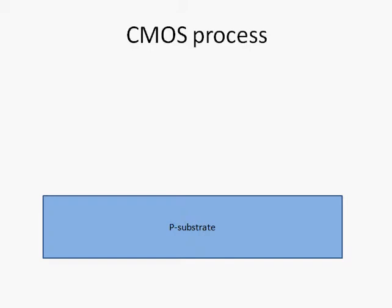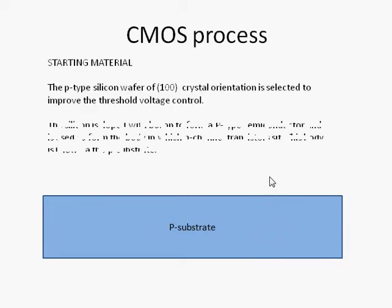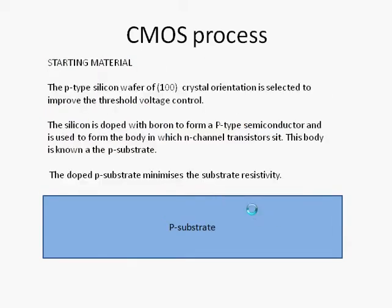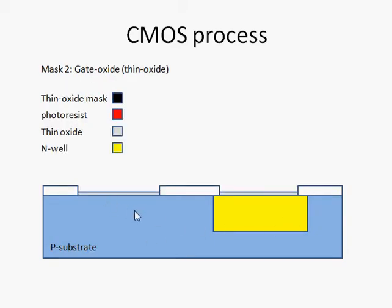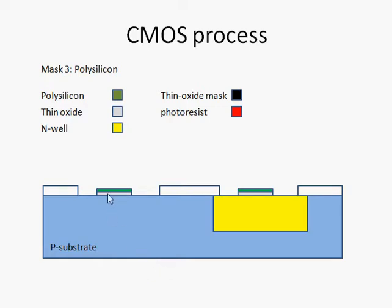Welcome back to part 2 of our discussion on the CMOS process. Let's quickly recap what we did earlier. We first had a P-substrate and then we defined the N-well. The N-well is where all the P-MOS transistors will be located, and the N-MOS transistors will be seated in the P-substrate. After which, we deposited a layer of gate oxide followed by a layer of polysilicon to form the gate of the transistors. So if you're looking for the gate of the transistors, you should always be looking for the polysilicon layer.